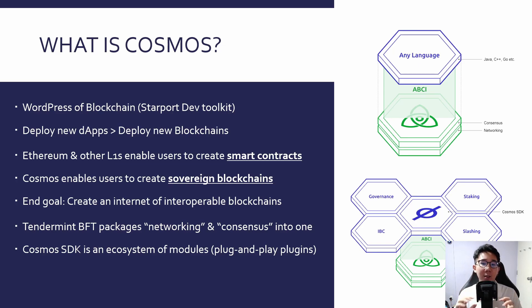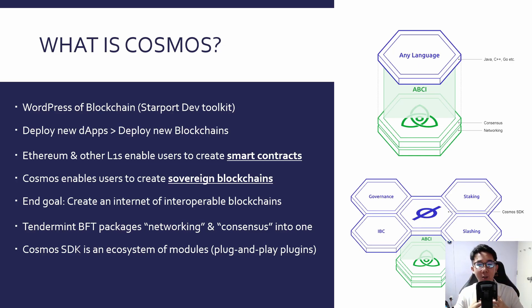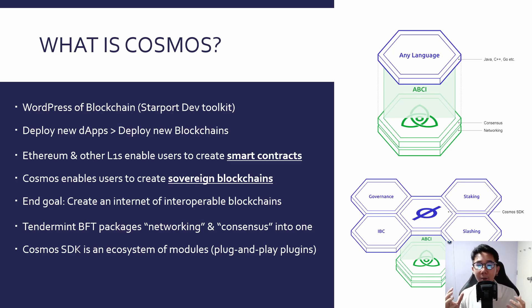What Cosmos does is make it very easy to build a blockchain. Specifically, it combines the consensus and networking components into a package, and this package is what you call Tendermint. This saves developers hundreds of hours on designing a new blockchain from scratch. For any new blockchain developers who want to come in, they just have to focus on the application part rather than thinking about all the technical parts of how blockchain works.